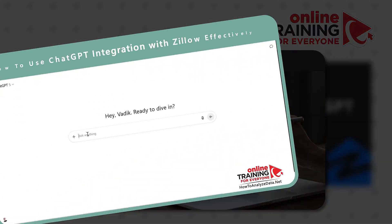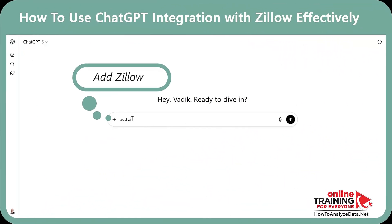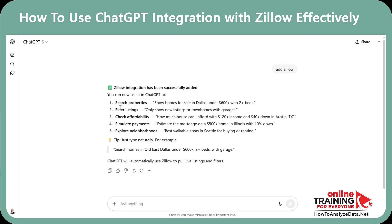To start talking with Zillow, all you need to do is say "Add Zillow." ChatGPT added Zillow, and here's what you can do now: search properties, filter listings, check affordability, simulate payments, and explore neighborhoods.